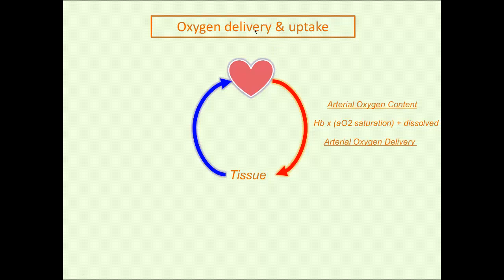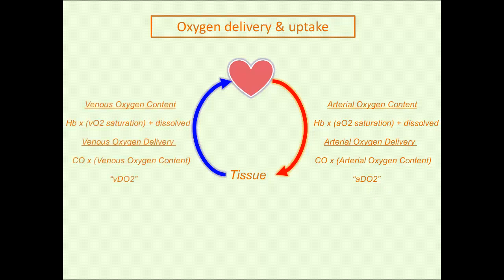Oxygen delivery is the content multiplied by the rate of flow—the cardiac output—like the speed at which the train is moving to deliver oxygen. By the same reasoning, you can calculate venous oxygen content using the mixed venous saturation, which is the new piece of information you get from the pulmonary artery catheter: the saturation drawn from the distal port. You can thereby determine the venous oxygen content and the venous oxygen delivery returning from the tissue back to the heart.